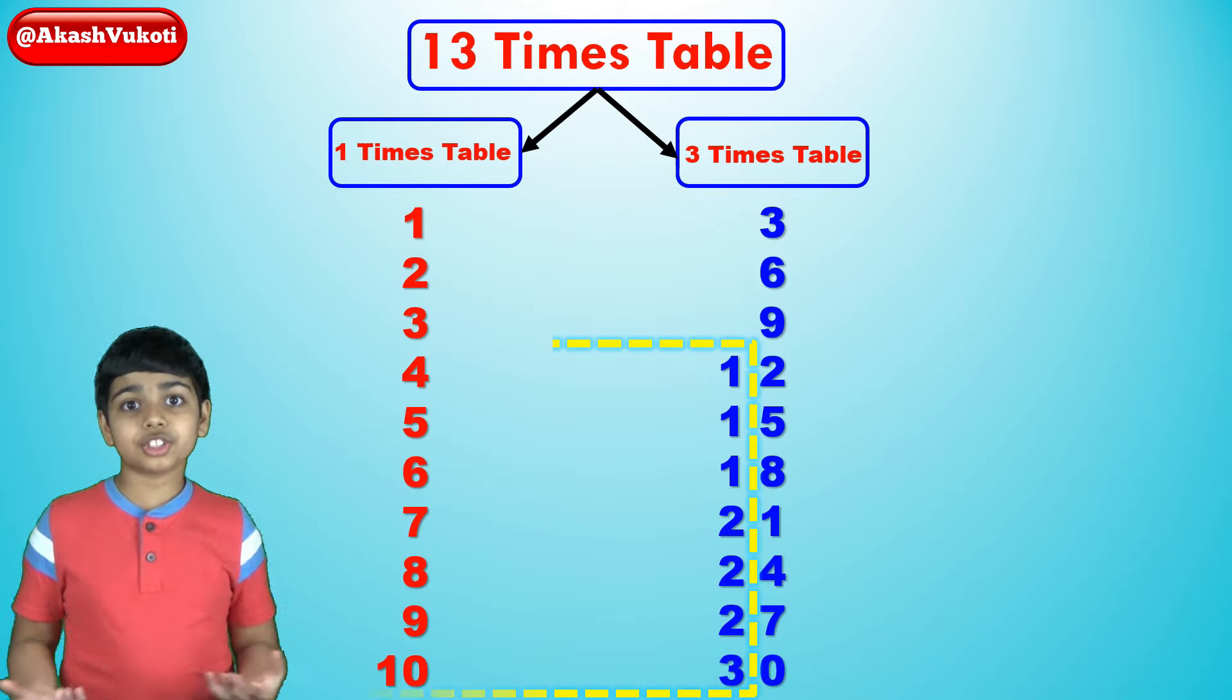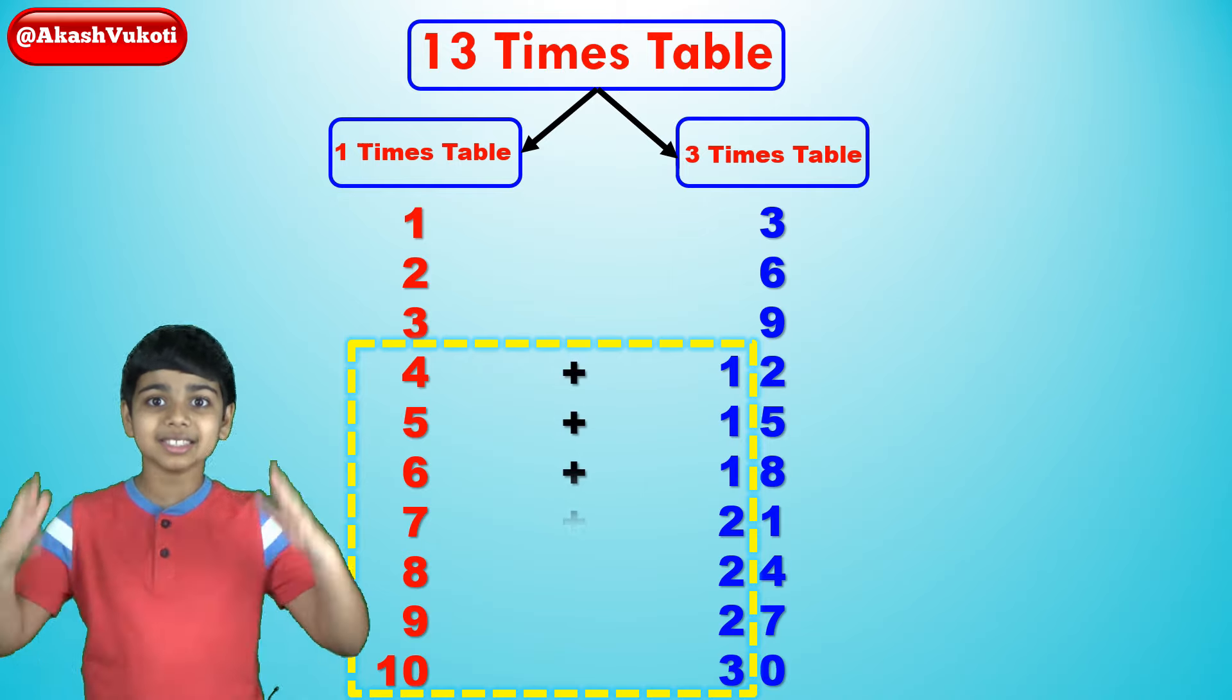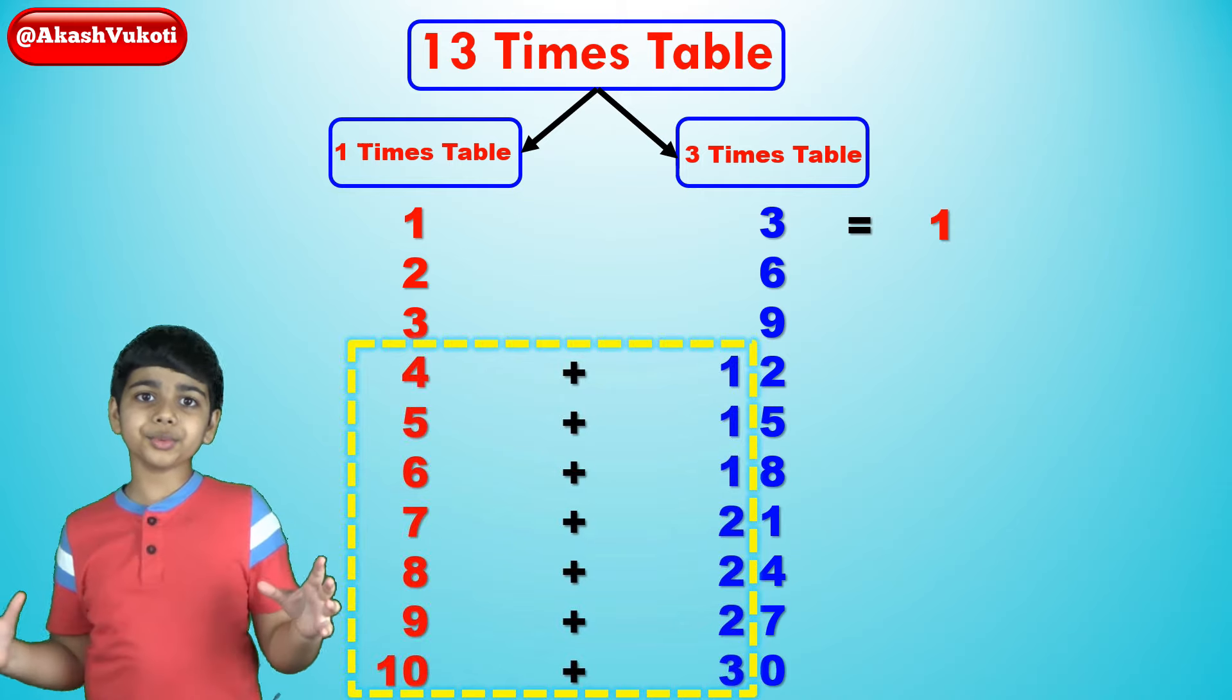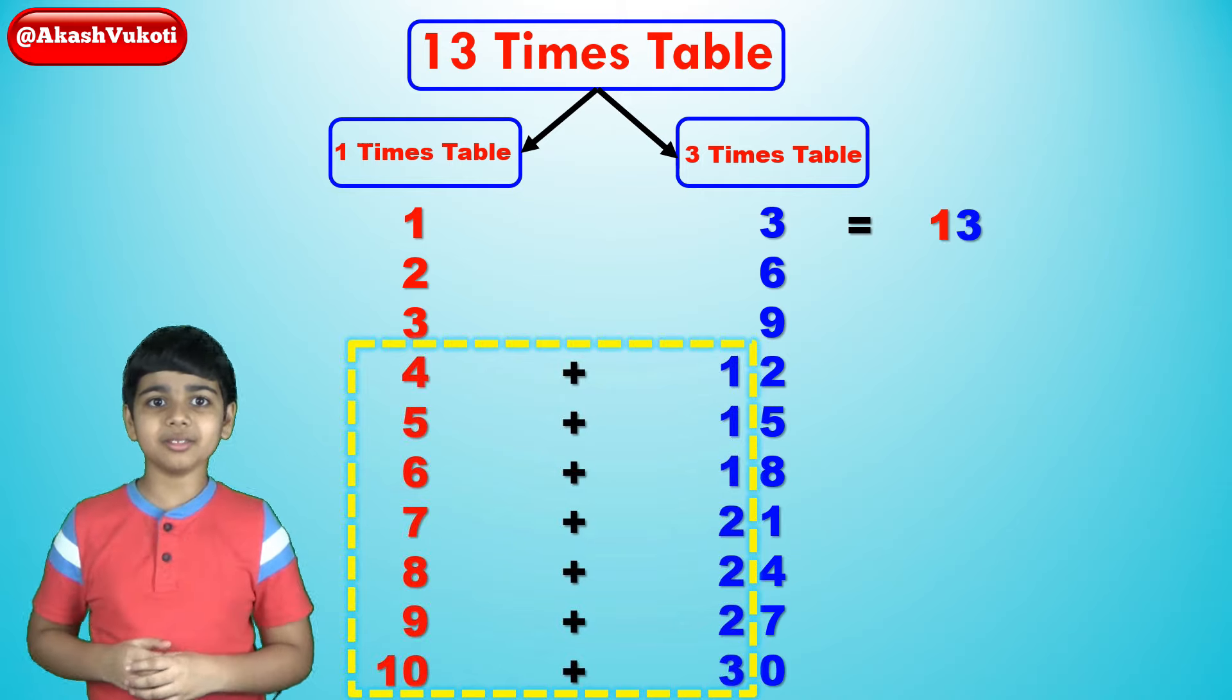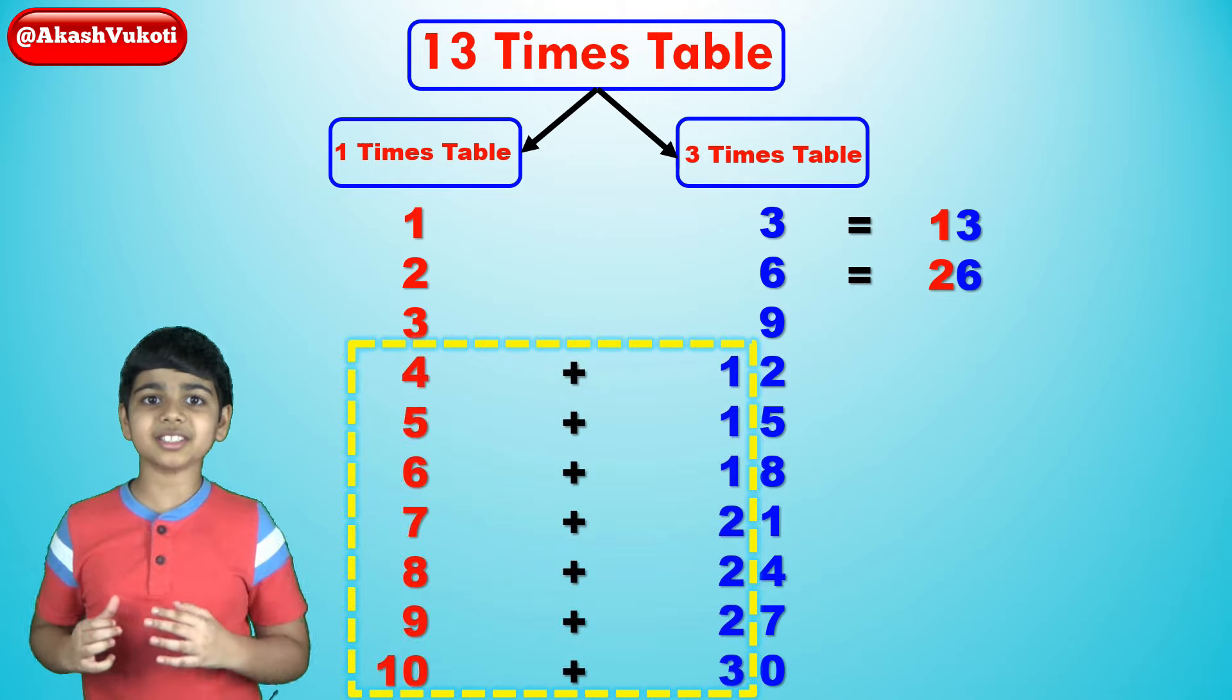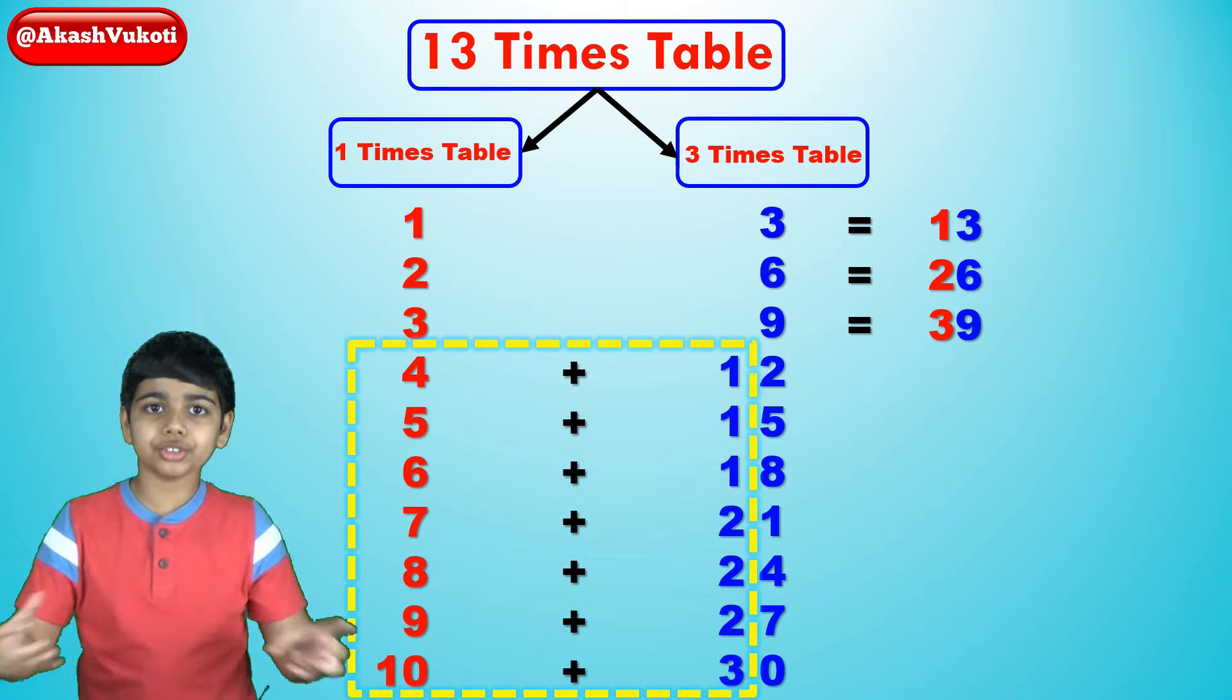Now just put these two together and that is basically the 13x table. 13x1 would be 1, 3 becomes 13. 13x2 is 2, 6, 26. 13x3 is 3, 9, 39.